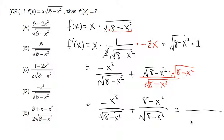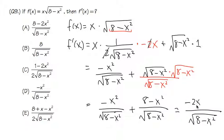The denominator is the same square root of 8 minus x squared for both terms, so I can write them as one fraction. On the numerator, I combine negative x squared plus 8 minus x squared. That gives negative 2x squared plus 8 on top, over the square root of 8 minus x squared on the bottom.